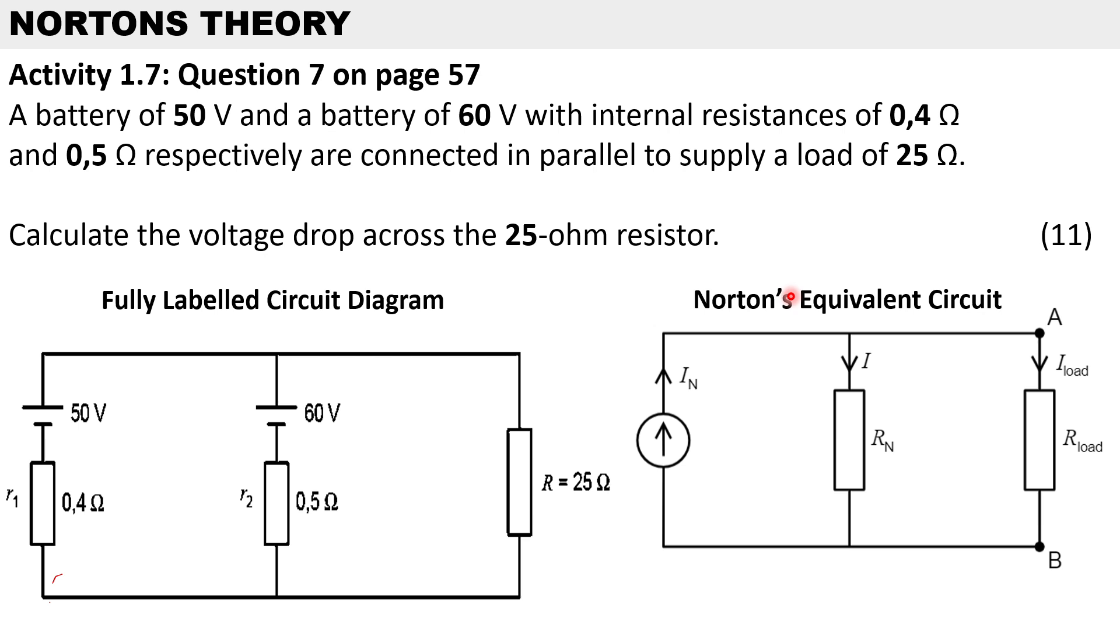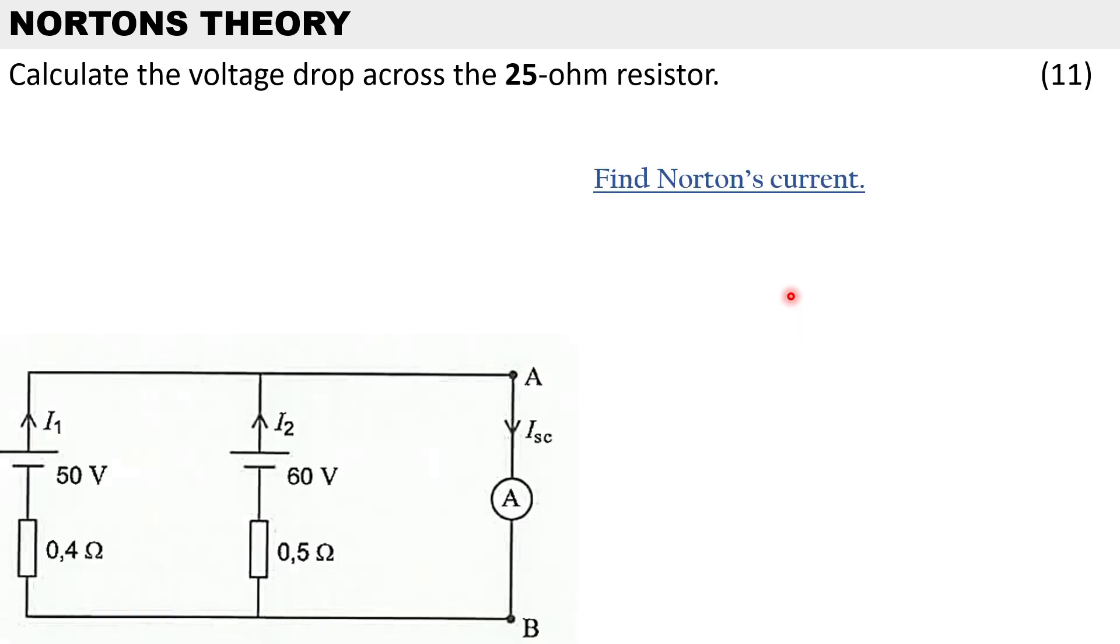So let's take a look at our first step. To calculate Norton's current, that's the short circuit current after we've removed the load resistor. The short circuit current is the same as Norton's current.